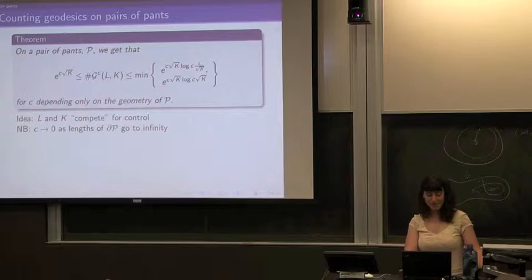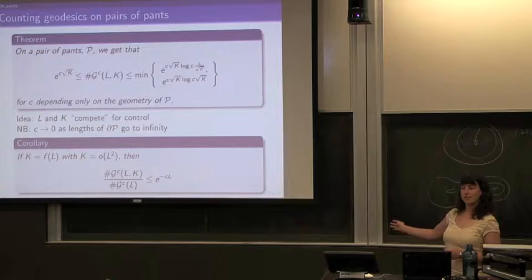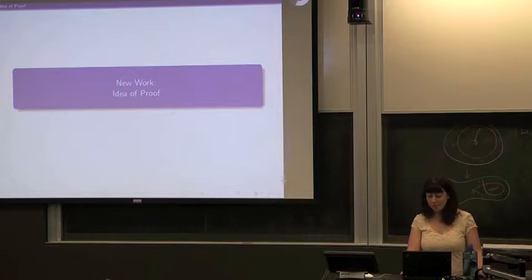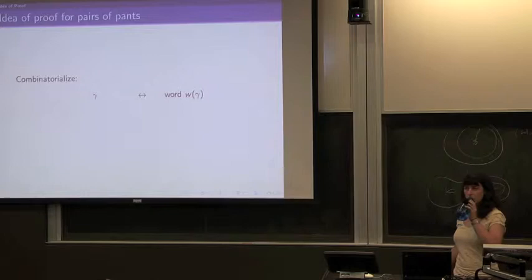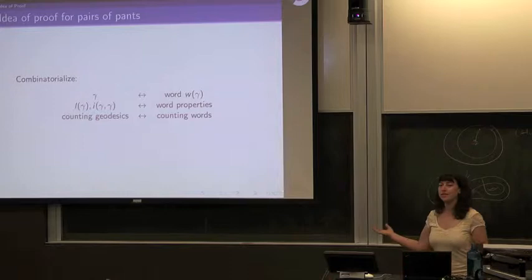Reducing this a little bit: if K grows more slowly than L², then you already get exponentially fewer geodesics of intersection number K than you do of all geodesics.